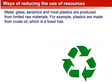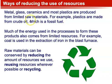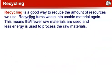Ways of Reducing the Use of Resources. Metal, glass, ceramics, and most plastics are produced from limited raw materials. For example, plastics are made from crude oil, which is a fossil fuel. Much of the energy used in forming these products also comes from limited resources — for example, coal is used in the extraction of iron in the blast furnace. Raw materials can be conserved by reducing the amount of resources we use, reusing resources wherever possible, or by recycling. Recycling turns waste into usable material again, meaning fewer raw materials and less energy are needed to process them.